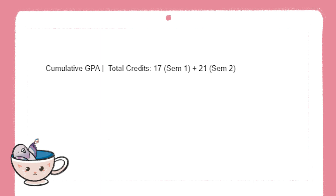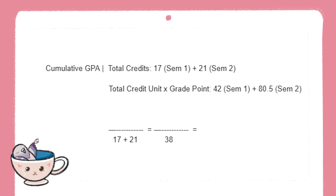If we reflect this on our grades, we will be totalling up the credits from semester 1 and 2, which gives us 38. Totalling up the credit unit times grade points from semester 1 and 2 will result in 122.5, and dividing them together gives us 3.22 as the cumulative GPA.